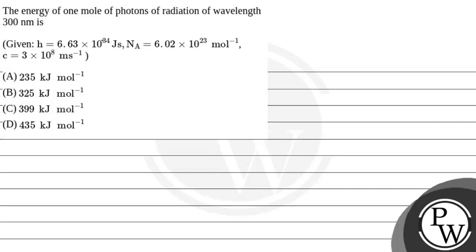Hello children, let's read this question. The energy of one mole of photons of radiation of wavelength 300 nanometer is — given that H is Planck's constant, N is the Avogadro number, and C is the speed of light. These are the following options given to us. First of all we will see the key concept of this question.